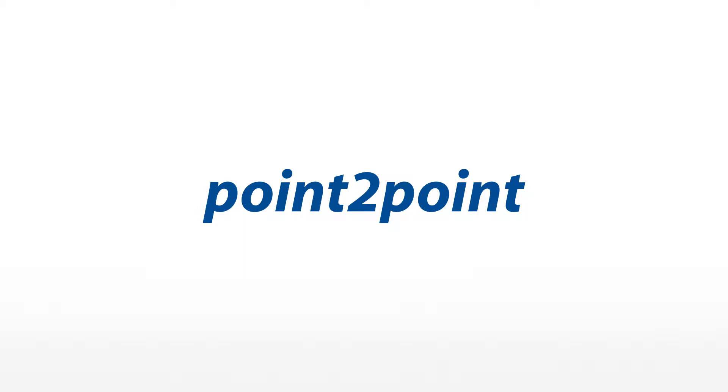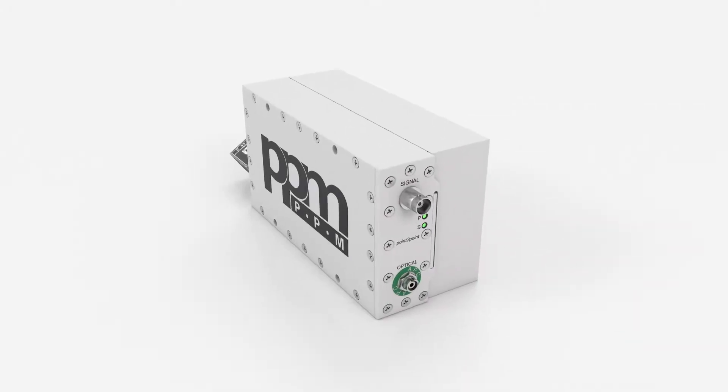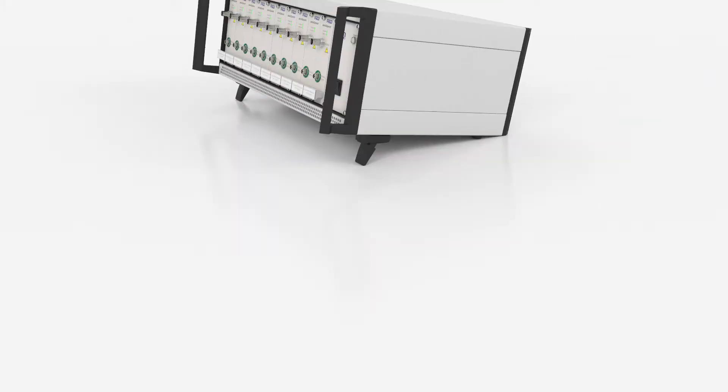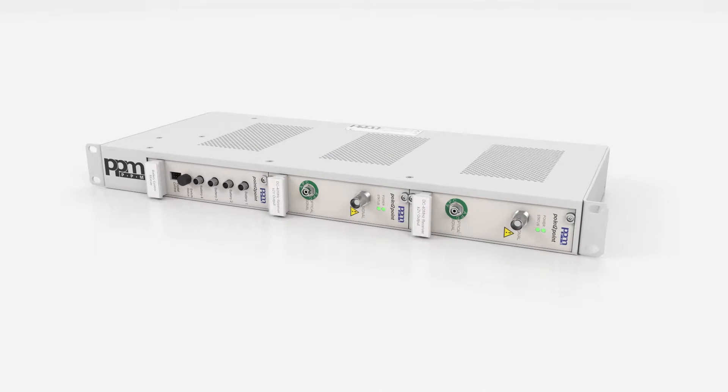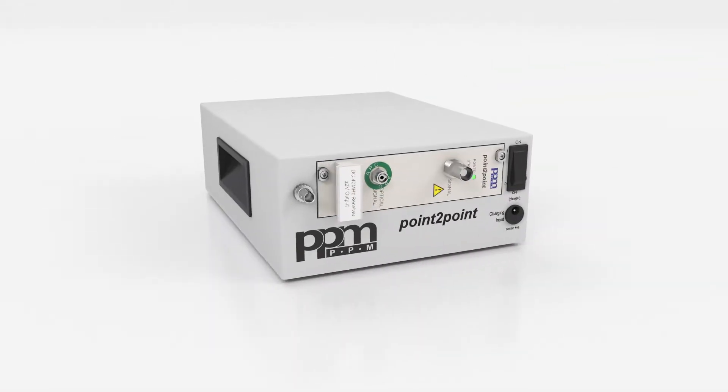Point-to-point RF over fiber links are single input fixed gain links for transporting wideband RF signals. Point-to-point links can transport signals up to 1 km with negligible degradation of signal-to-noise or frequency response.